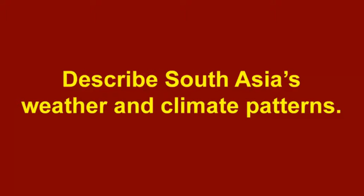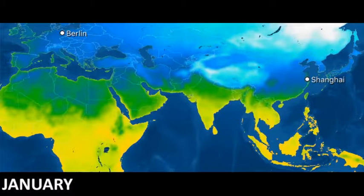Now we're going to describe South Asia's weather and climate patterns. We're going to see differences in time of year, but also differences on one side of the region versus the other. Here we're looking at temperature, and when we think about temperature, there are some variations that we see across the surface and some reasons for that.